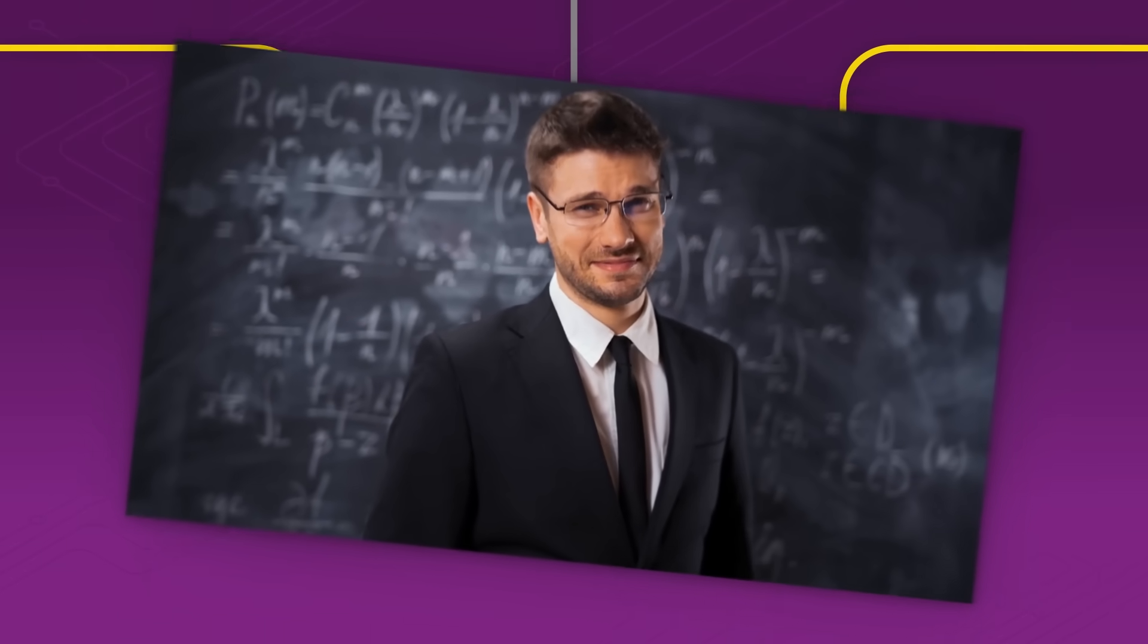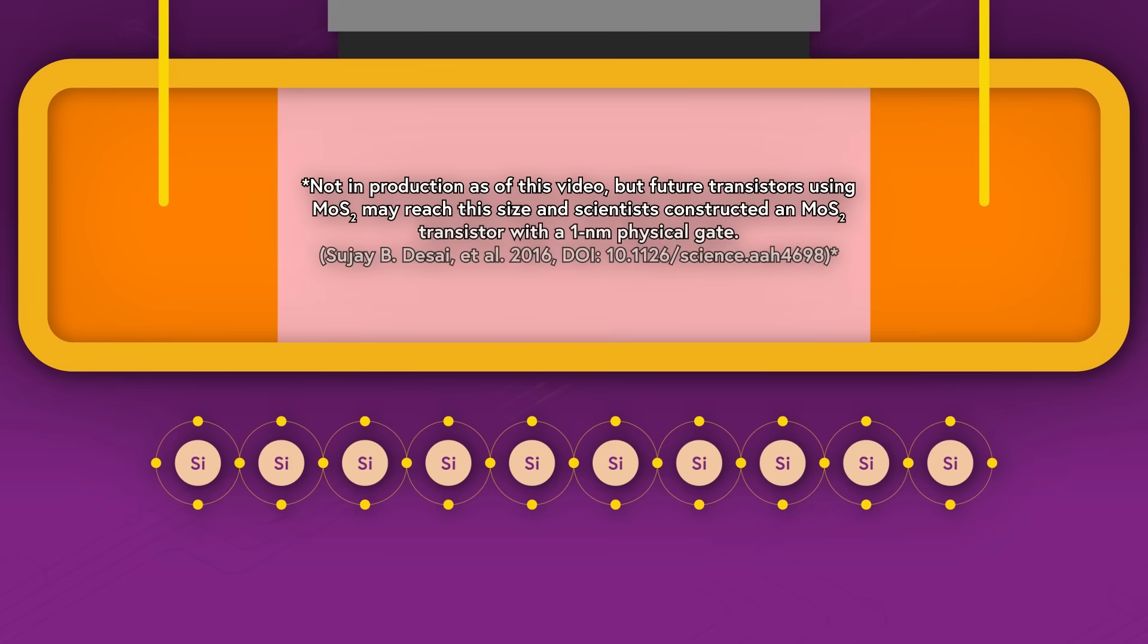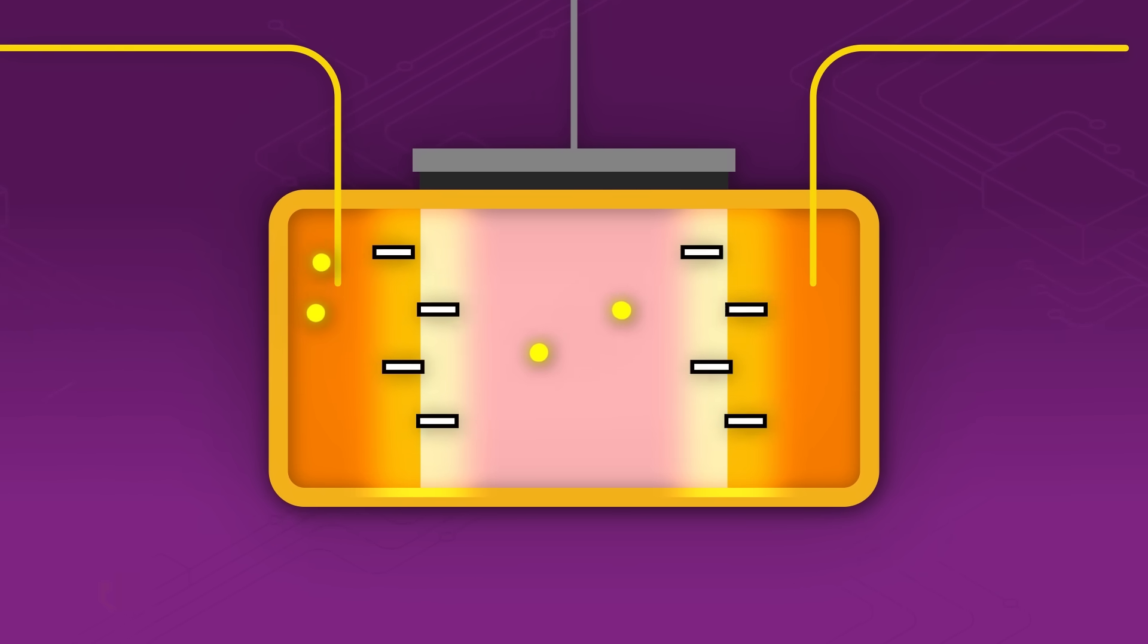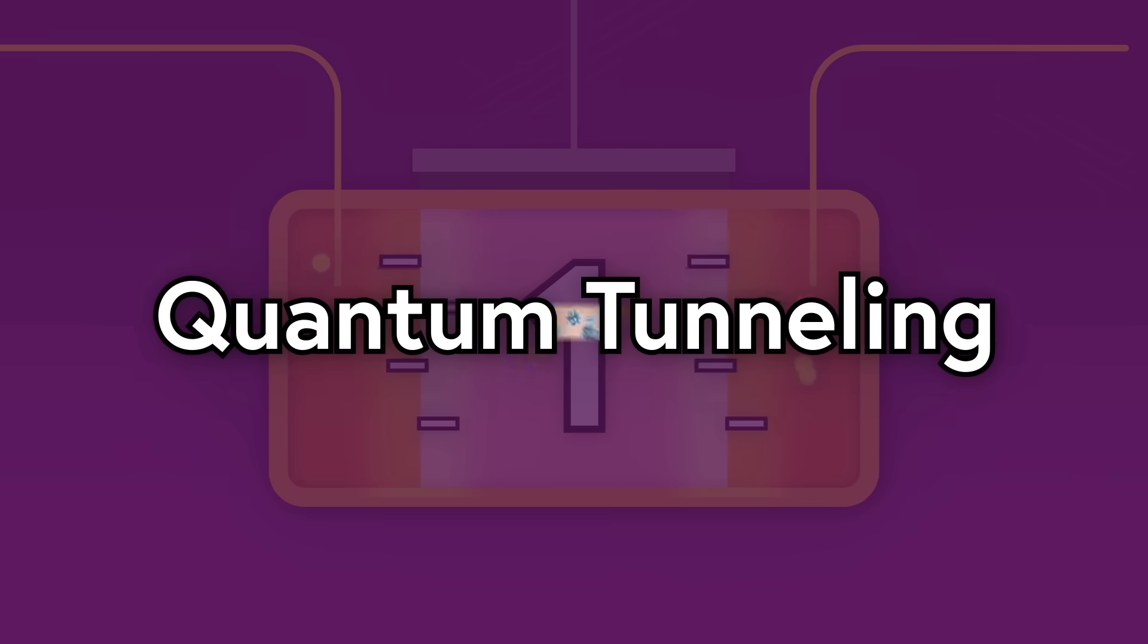But why can't they shrink anymore? Today there are transistors that are just two nanometers wide, the width of ten silicon atoms. If you go much smaller, electrons will be able to just hop the depletion layer and flip zeros to ones at random thanks to a little move called quantum tunneling.